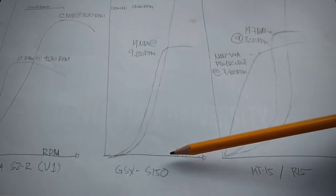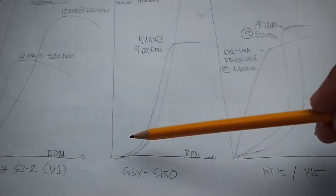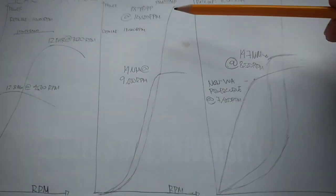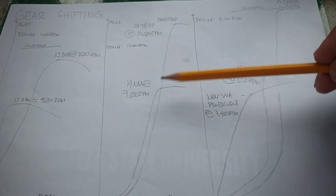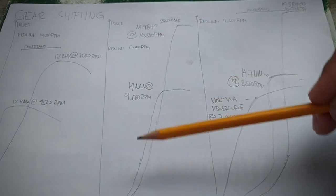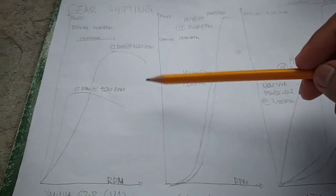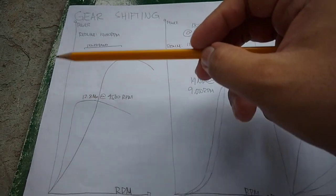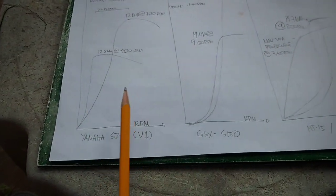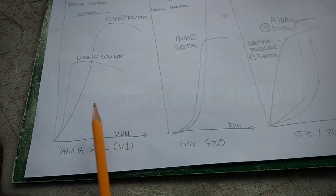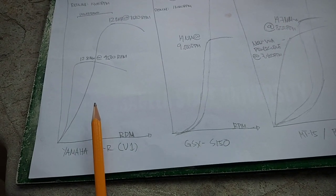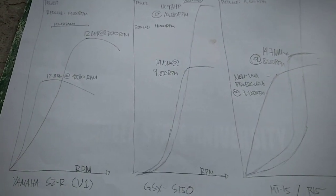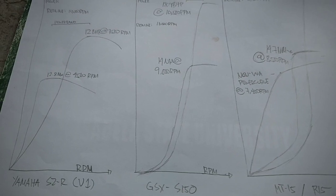In comparison naman sa high RPM na motor, wala sila ng hatak dito sa baba and then biglang tataas pagdating ng high RPM kasi nandun lumalabas yung lakas nila. If titignan natin, the y-axis being your power output and then the x-axis being your RPM, mas maagang lumalabas yung pwersa ni low revving motorcycle kumpara kay high revving motorcycle.